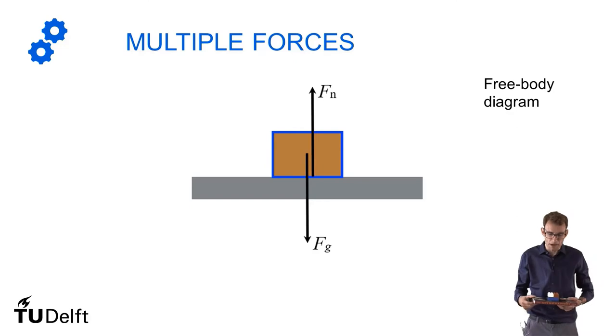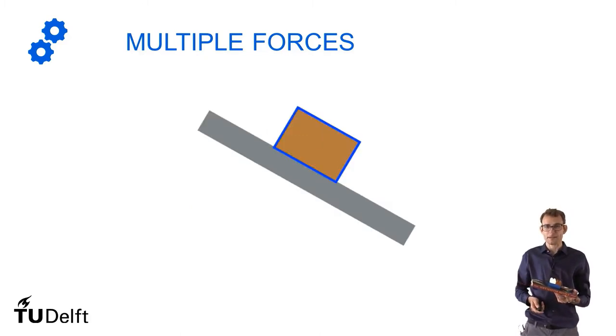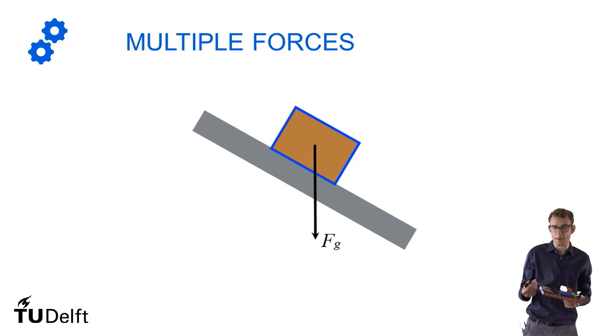Now this is still a rather one dimensional situation. But we can very easily make it multidimensional by simply tilting the book. Now the force of gravity is still pointing down. But the normal force is no longer pointing up because perpendicular to the surface is now under some angle.